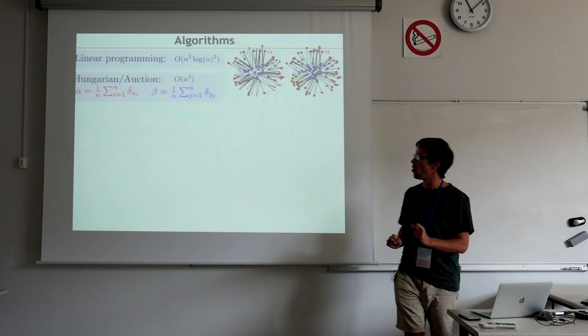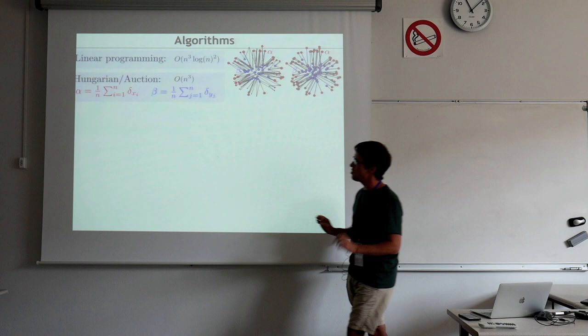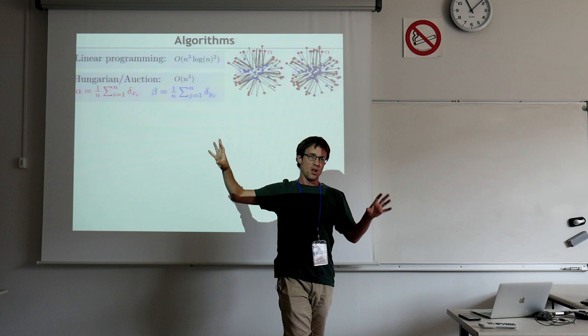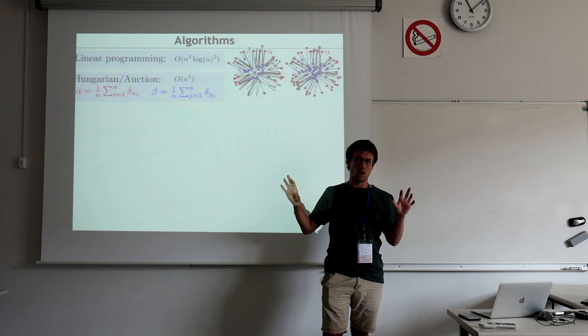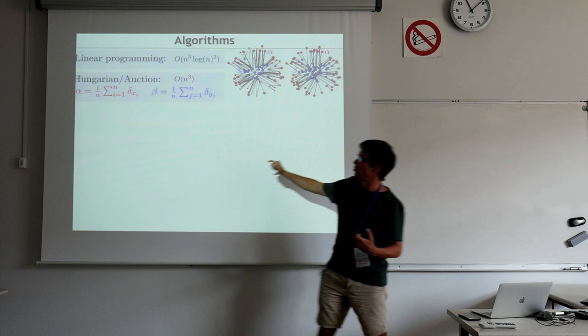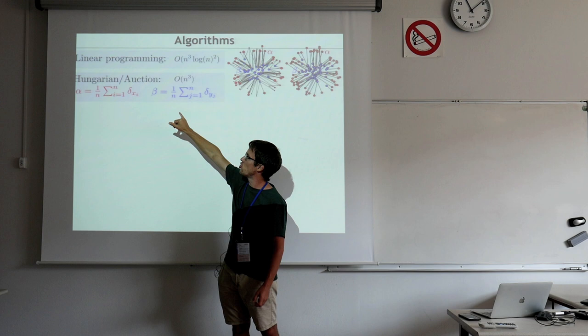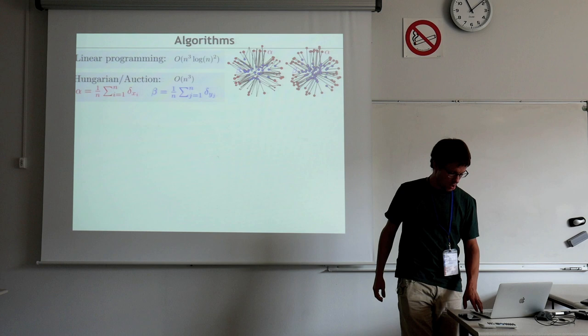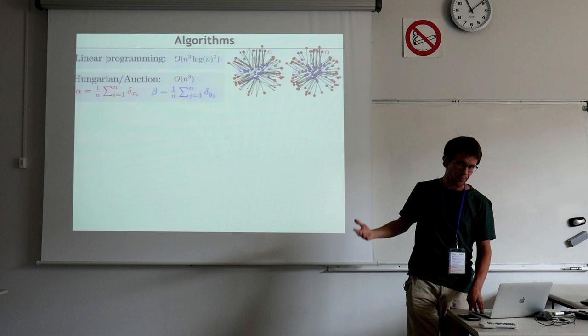Related to simplex but with a different dual flavor, there are algorithms dedicated to the case where the masses are uniform — just points. When you have the same number of points, an important theorem of Birkhoff and von Neumann states that the Kantorovich problem's solution is going to be an optimal assignment — a bijection. This is solved using two very efficient algorithms: the Hungarian algorithm and the auction algorithm of Bertsekas, both with cubic complexity and fairly easy to implement — real gems of combinatorial optimization.